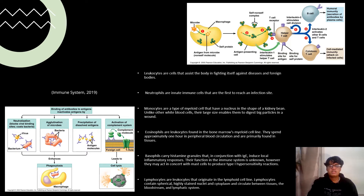Lymphocytes are leukocytes that originate in the lymphatic cell line. Lymphocytes contain spherical, highly stained nuclei and cytoplasm. They circulate between tissue, the bloodstream, and the lymphatic system. Additionally, the lifespan varies according to the subtype in which they are differentiated.